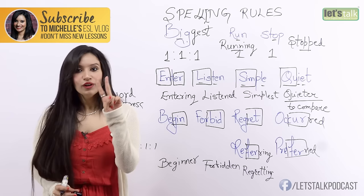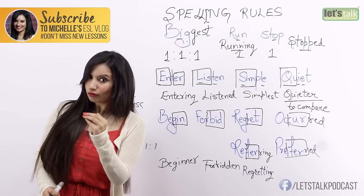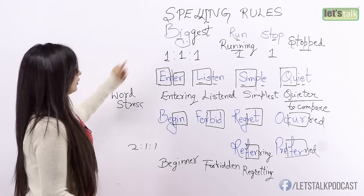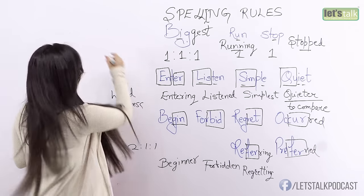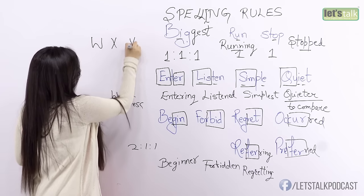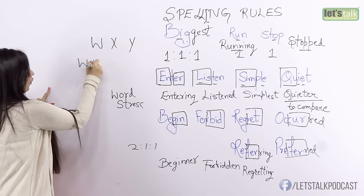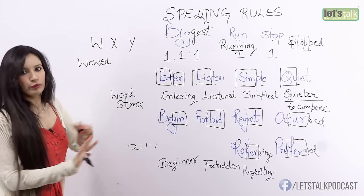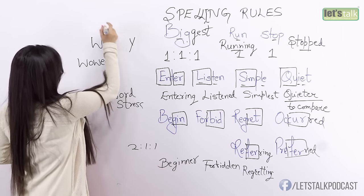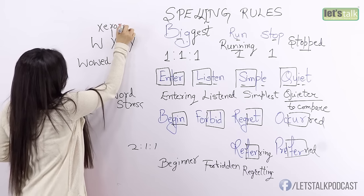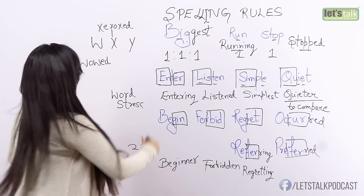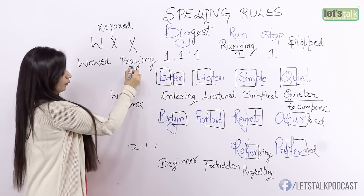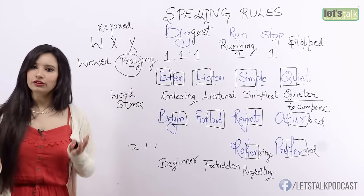Don't be too confused — if you're too confused, watch the video twice; that's really going to help you. Now I have something very important to tell you. For this rule, you do not double the last consonant. Let's take an example: 'xeroxed' — did we double this last consonant? No, we did not. Here: 'praying.' Although we have a vowel and a consonant and it is a one-syllable word, still we did not double the last letter. So these are some exceptions that you need to take care of.